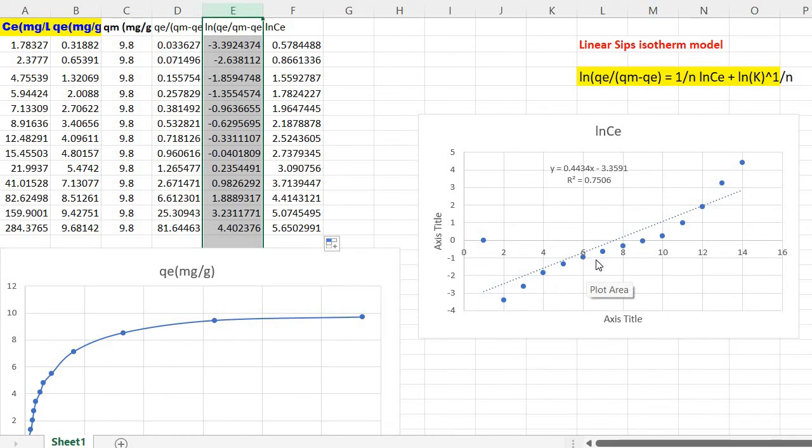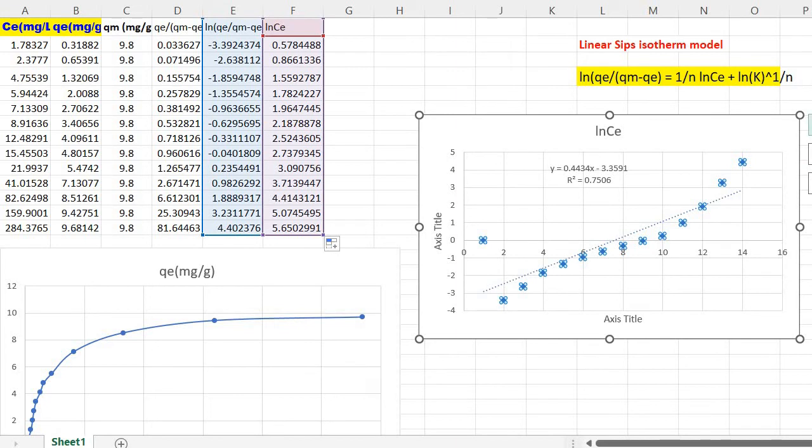Then in order to fit this, we need to click on this and click on plus sign, then go to trendline. Then click on linear, then more options. Then display equation on chart and display R square value.